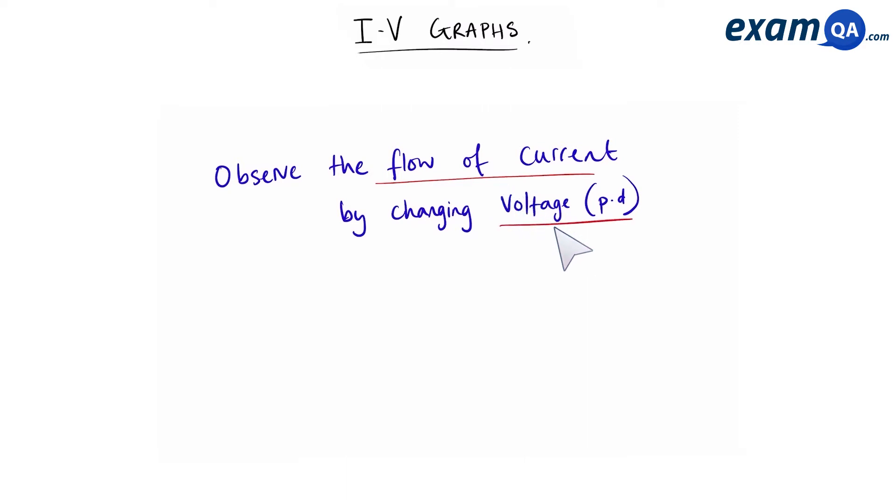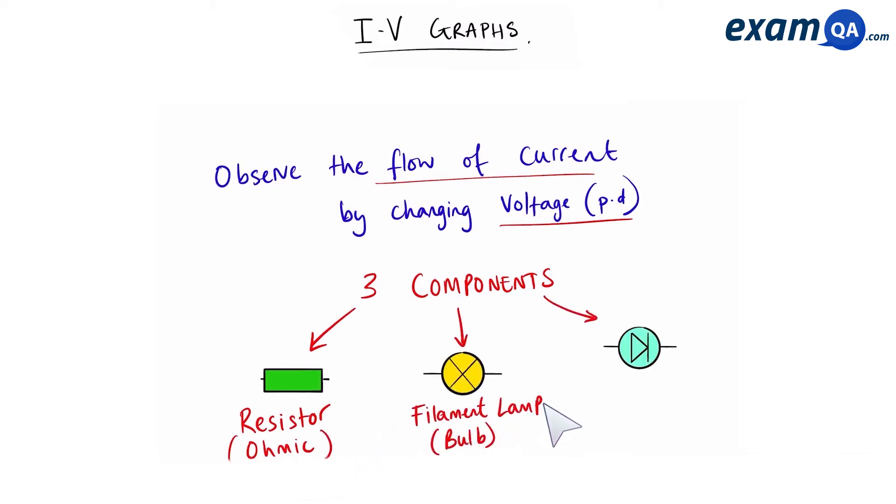In this video we're going to be talking about IV or otherwise known as current voltage graphs. What this means is that we're going to be observing how the flow of current changes in the component as we change the voltage or the potential difference. You can do this for various components but the three main components that we're going to be looking at are the standard resistor or an ohmic conductor, the filament lamp and the diode.